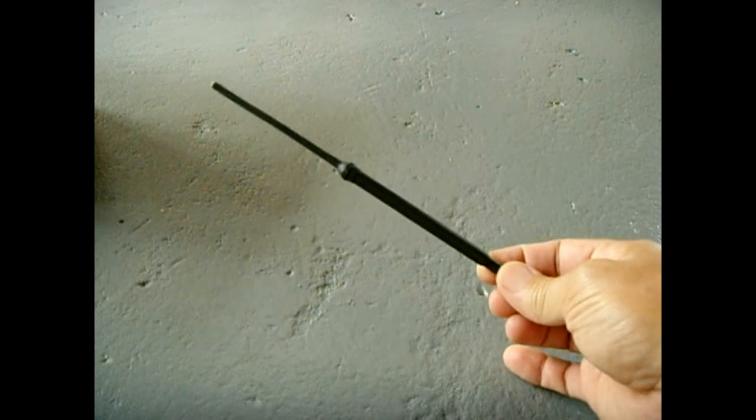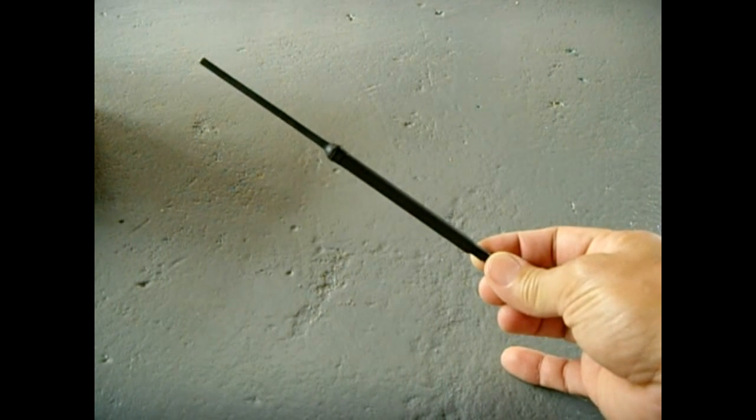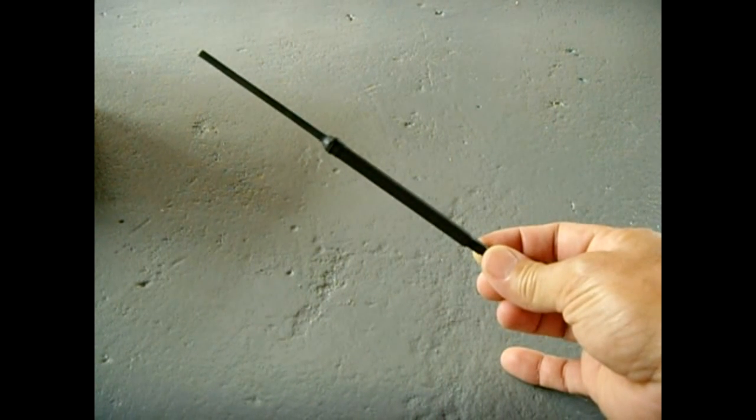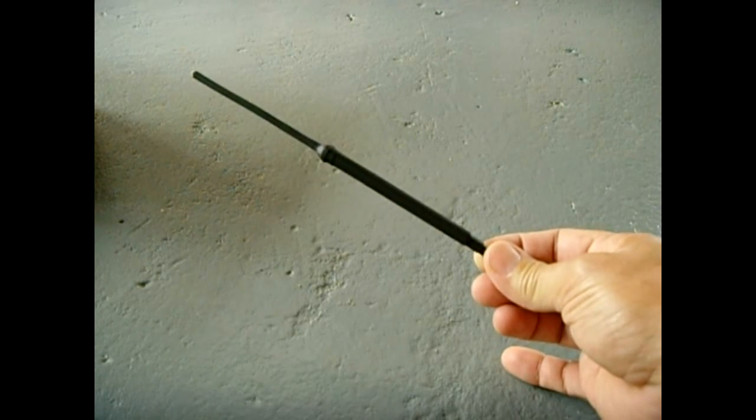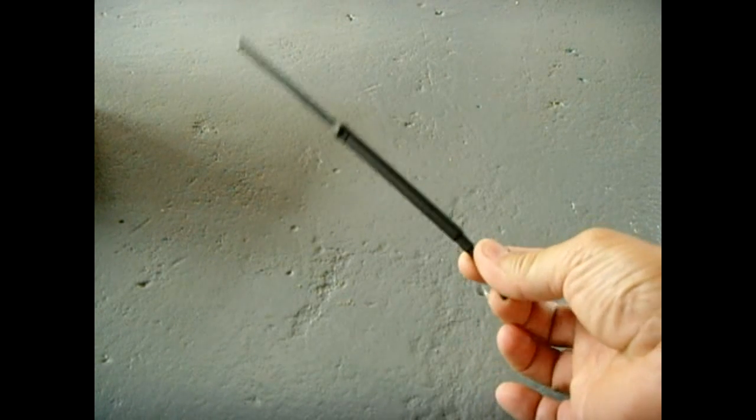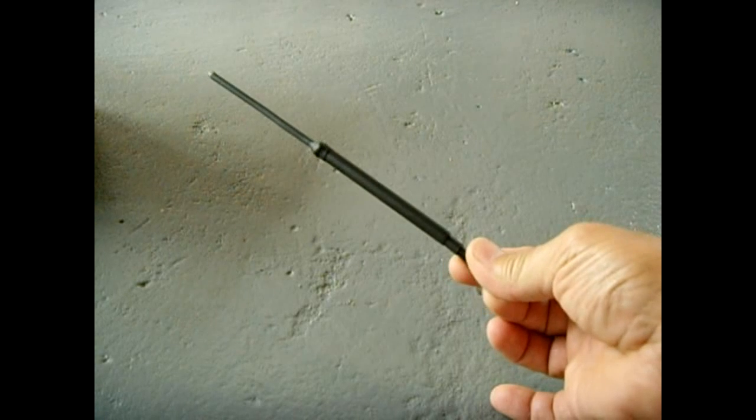Alright, this is what it looks like with the heat shrink tubing applied to it after it's all been soldered together. It's now ready for the BNC connector on this end right here.